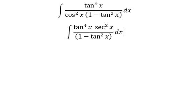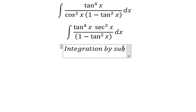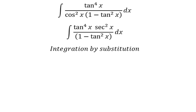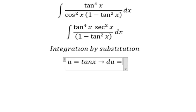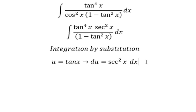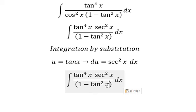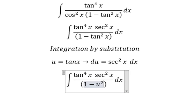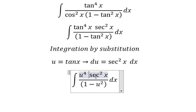Now we need to use integration by substitution. So I will put u equal to tan x, du we have secant of x squared dx. So this one we have u squared, this one we have u to the power of 4. Secant of x squared dx will change for du.